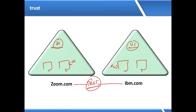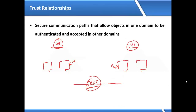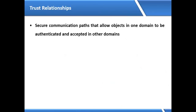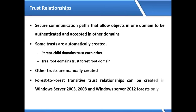How do you define a trust? Trust is a secure communication path which is going to allow objects in one domain to be authenticated and accepted in other domains — like users from one domain logging into another domain. We need trust between these two domains. There are many different types of trust. Some trusts are manually created, some are automatically created. I'll be showing you practically a trust called forest-to-forest trust, which was introduced in Active Directory 2003.